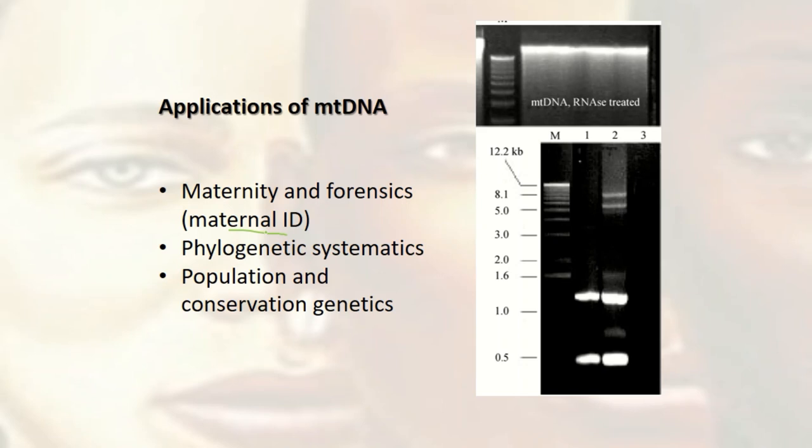We also have mitochondrial DNA being used in phylogenetic systems, where we build family trees — who is related to whom. It can give us the relationships or relatedness using maternal identification.